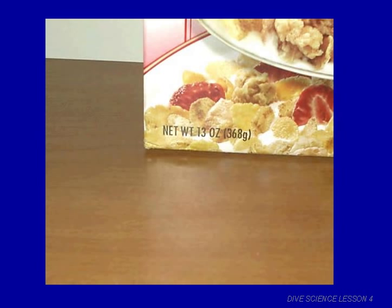Here's an example where weight and mass units are used interchangeably. On a cereal box, they have a weight of 13 ounces in English units — there are 16 ounces in a pound, so that's a little less than a pound — and 368 grams in SI units. They don't put newtons on the box; they use grams. On Earth, mass and weight are used interchangeably because gravity is about the same everywhere.